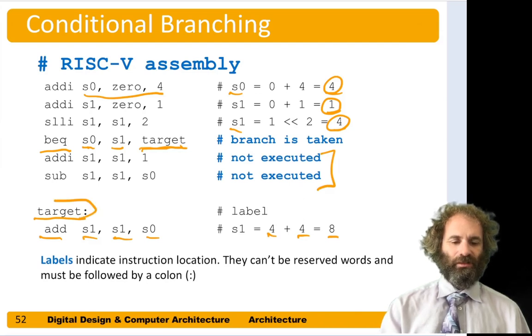You'll notice target is called a label, and it is followed by a colon to identify it as a label. It can't be any sort of reserved word, so for instance it couldn't be the name of an instruction. And we refer to the target in the branch instruction to say where to go to.